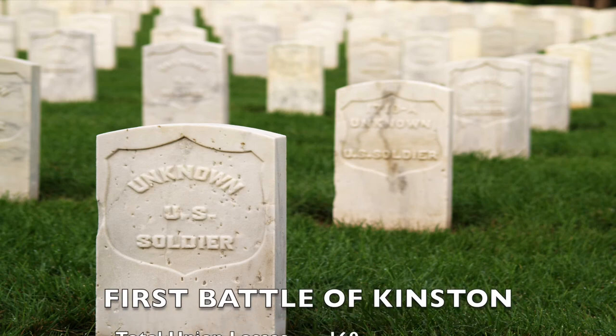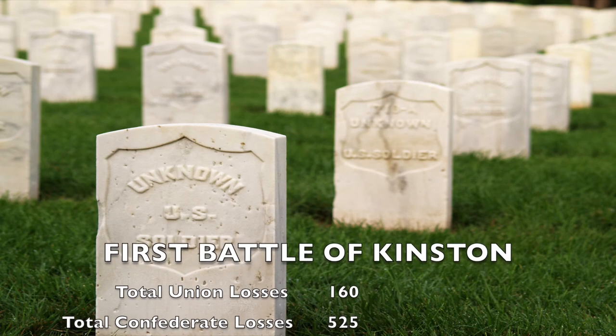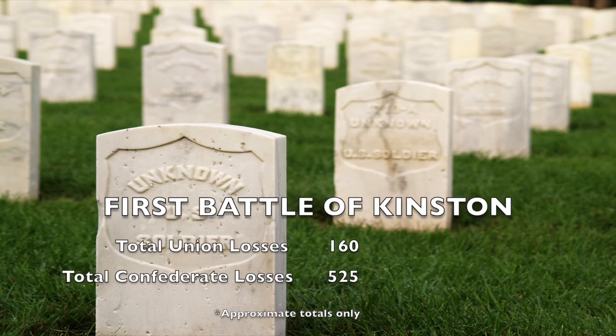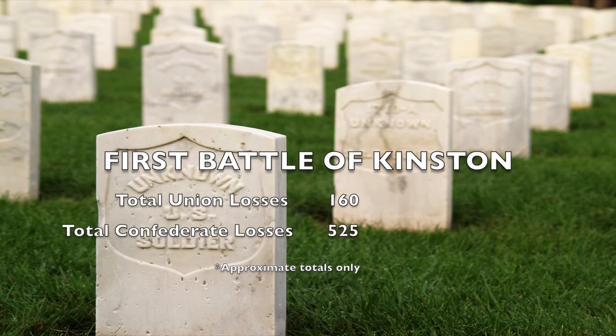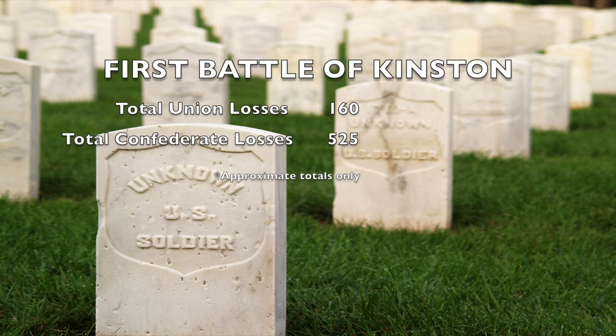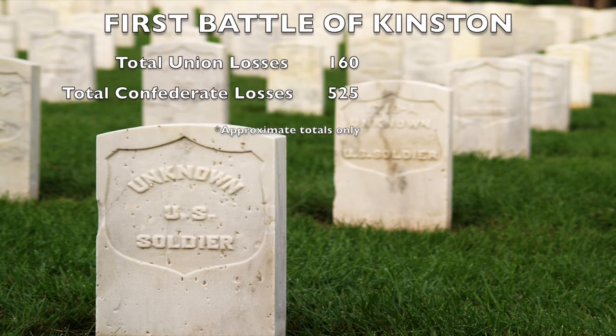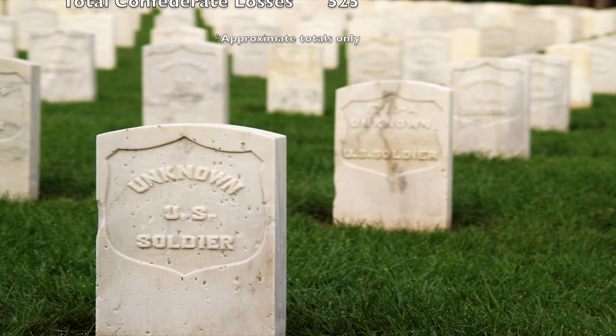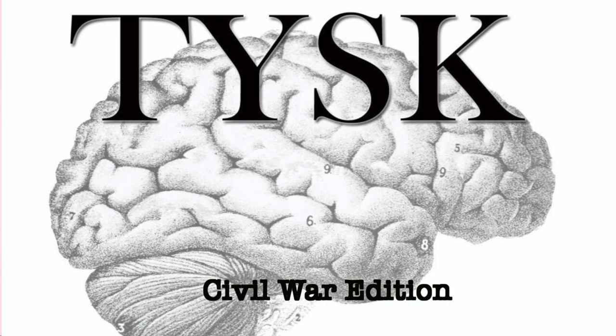Estimated casualties for the Union were 160 men killed, wounded, and missing, while the Confederates suffered 525 casualties, including 400 prisoners captured. Join us again next time on Things You Should Know, Civil War Edition.